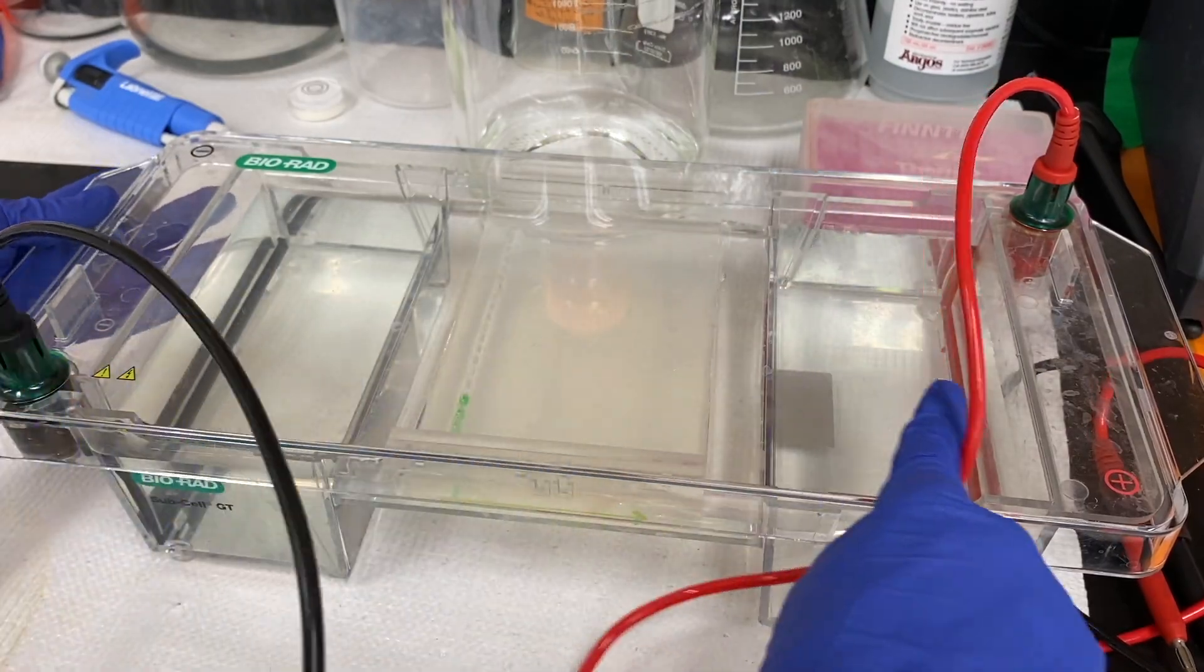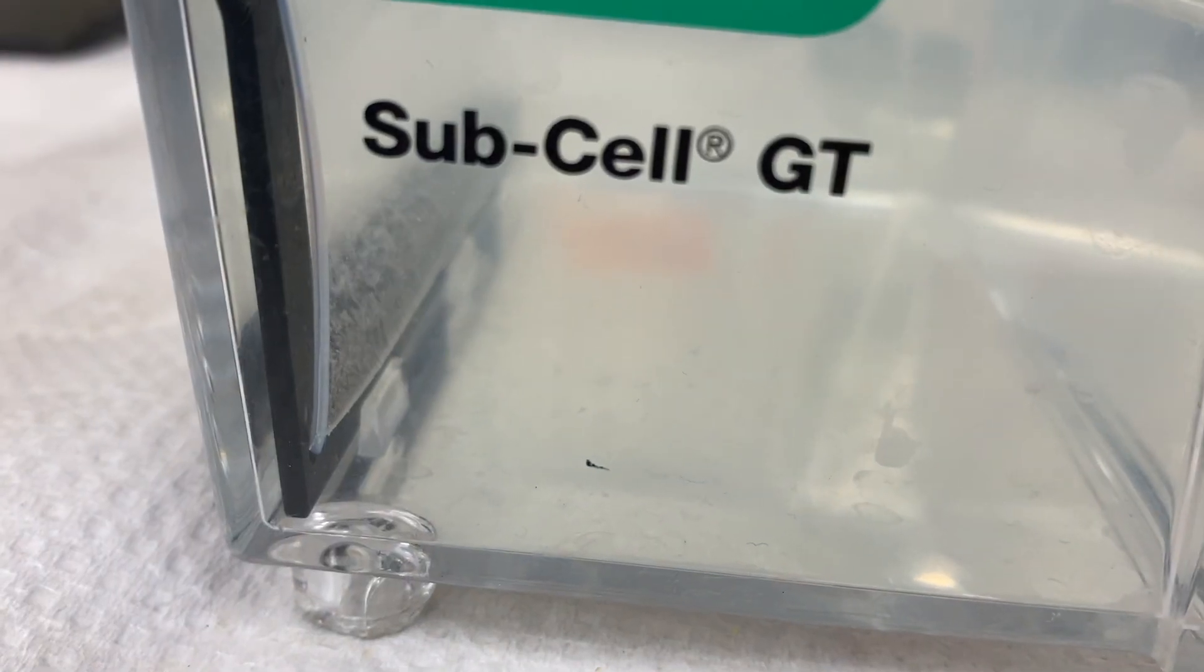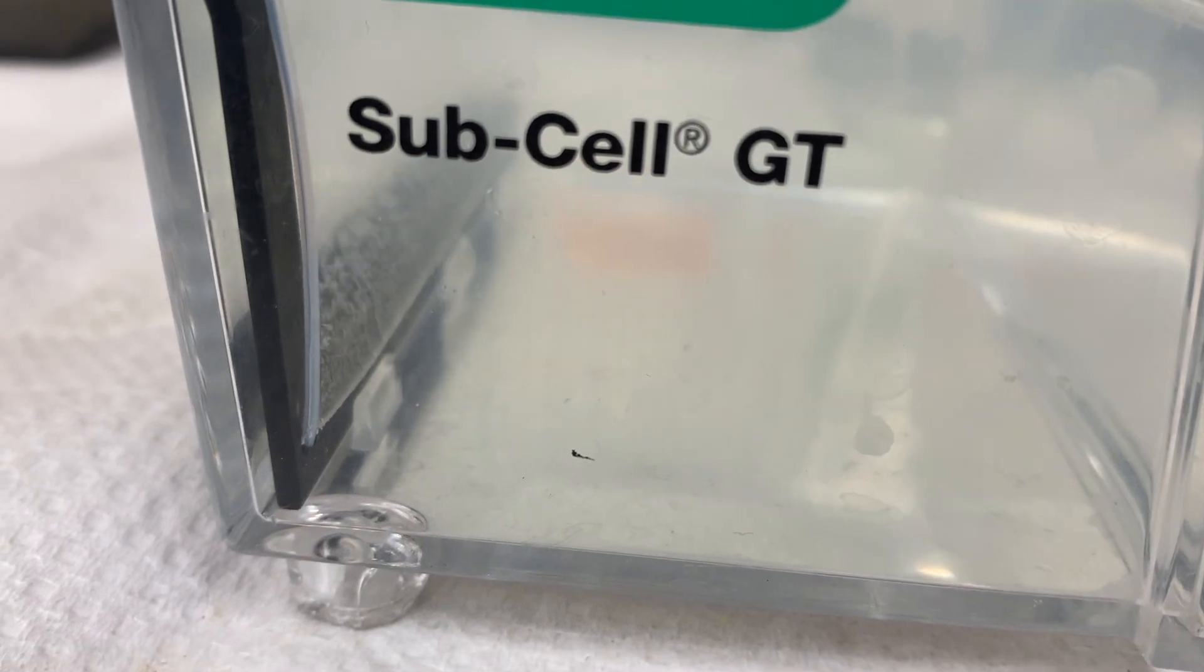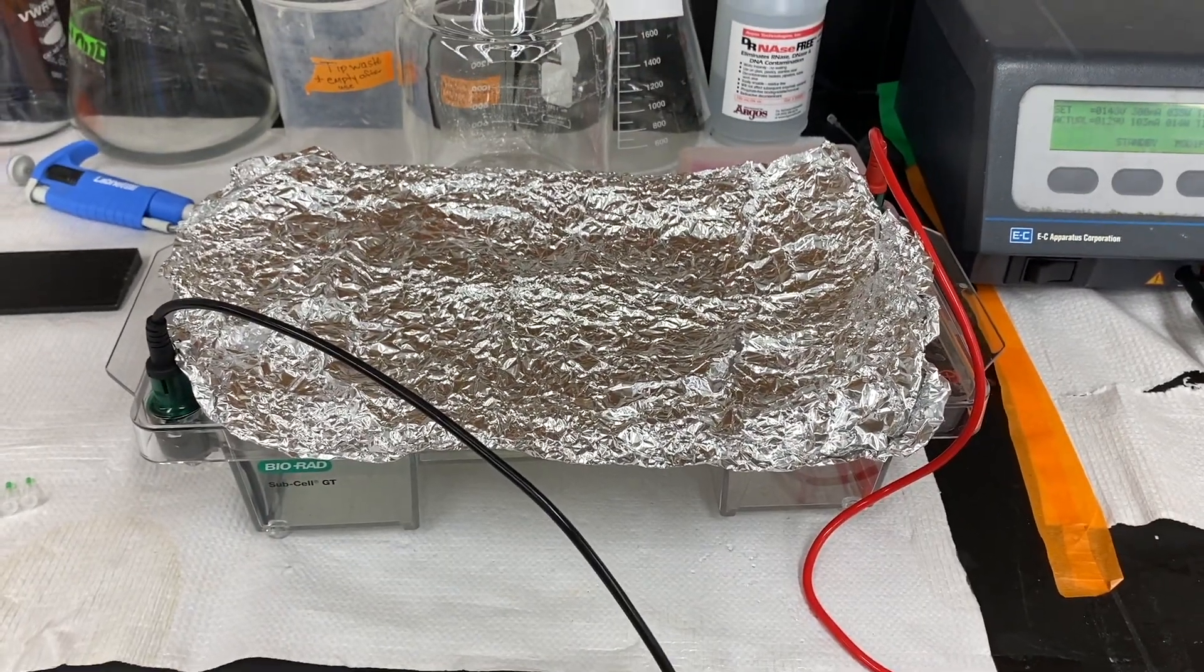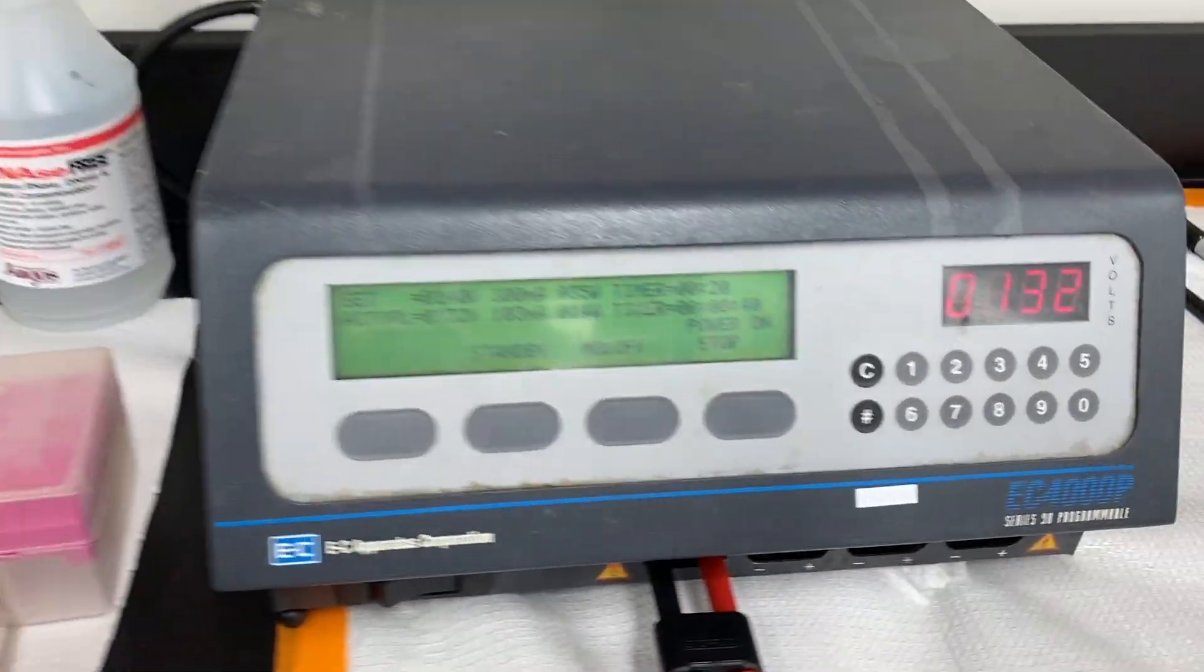That way the charged particles will flow in the correct direction. Once I start the machine, I can actually see the charged particles leaving from the negative end. So I go ahead and cover it with a tin foil lid and let it run for about 20 minutes.